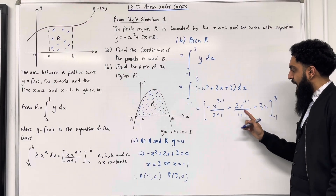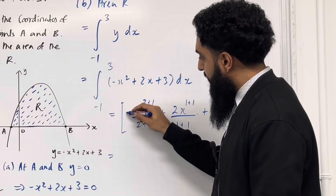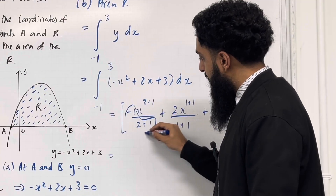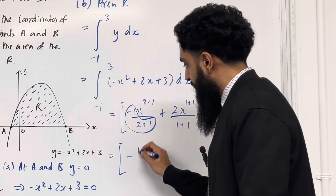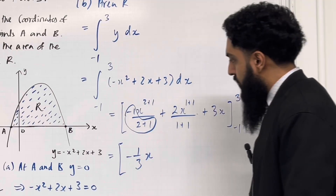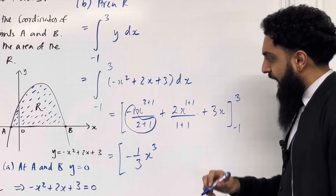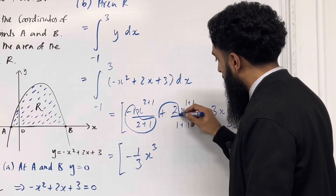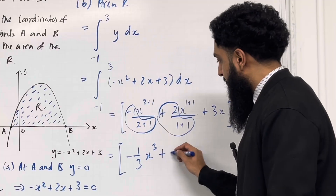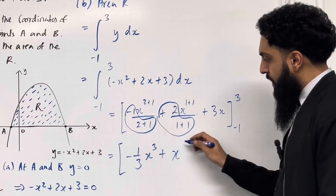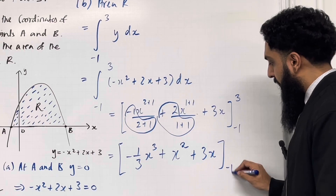I'm going to simplify each coefficient. For the first term, we've got -1 divided by 2+1, which is -1/3 — x to the power 3. For the second term, we've got 2 divided by 1+1, which is 2/2 = 1 — so plus x to the power 2, plus 3x. Close square bracket, limits -1 to 3.